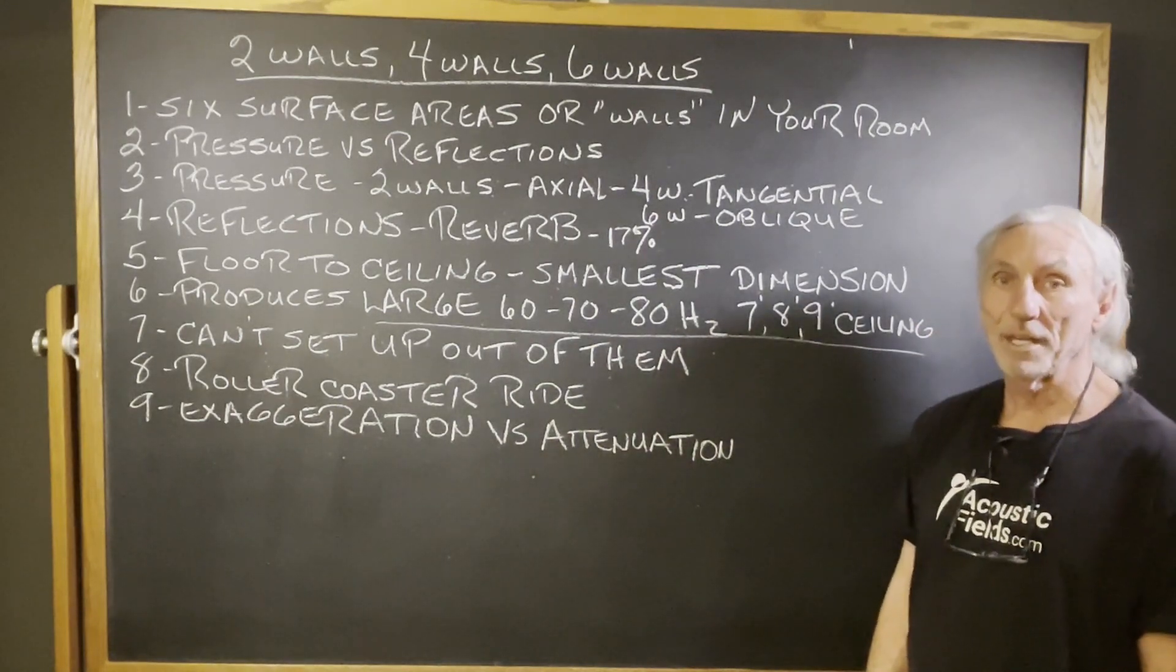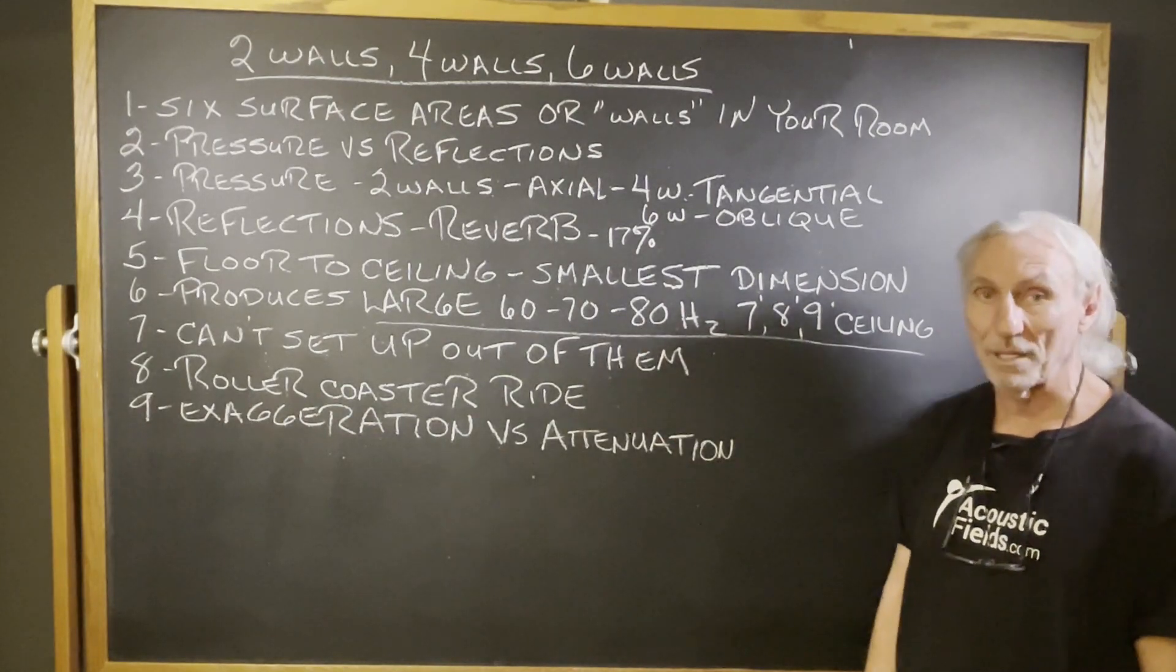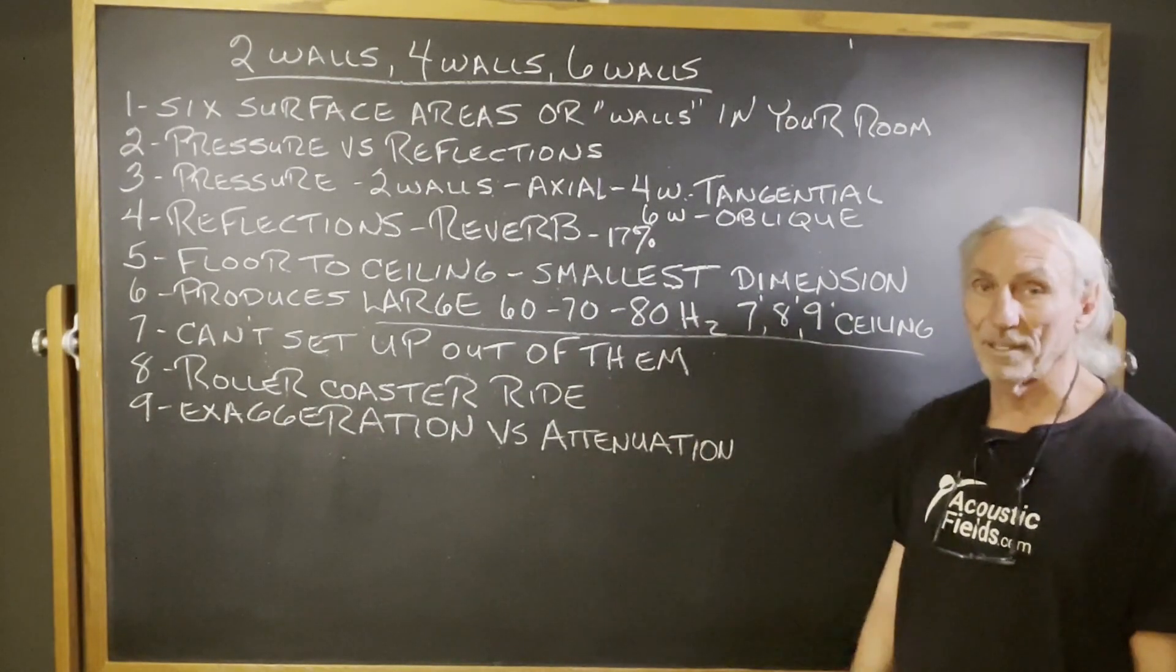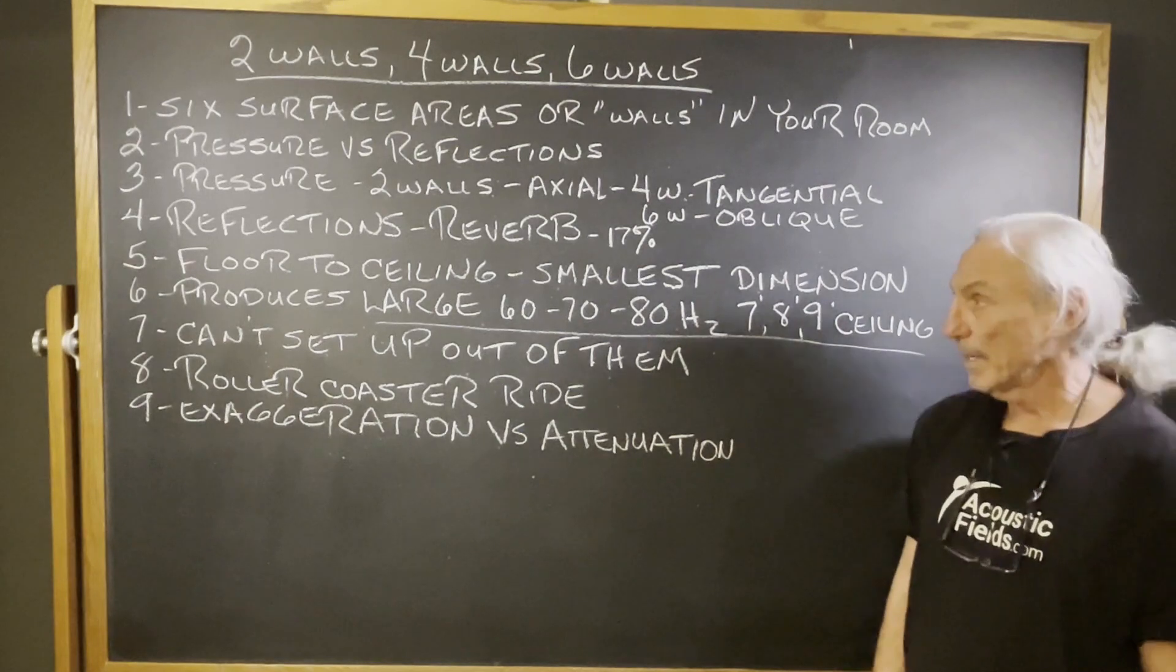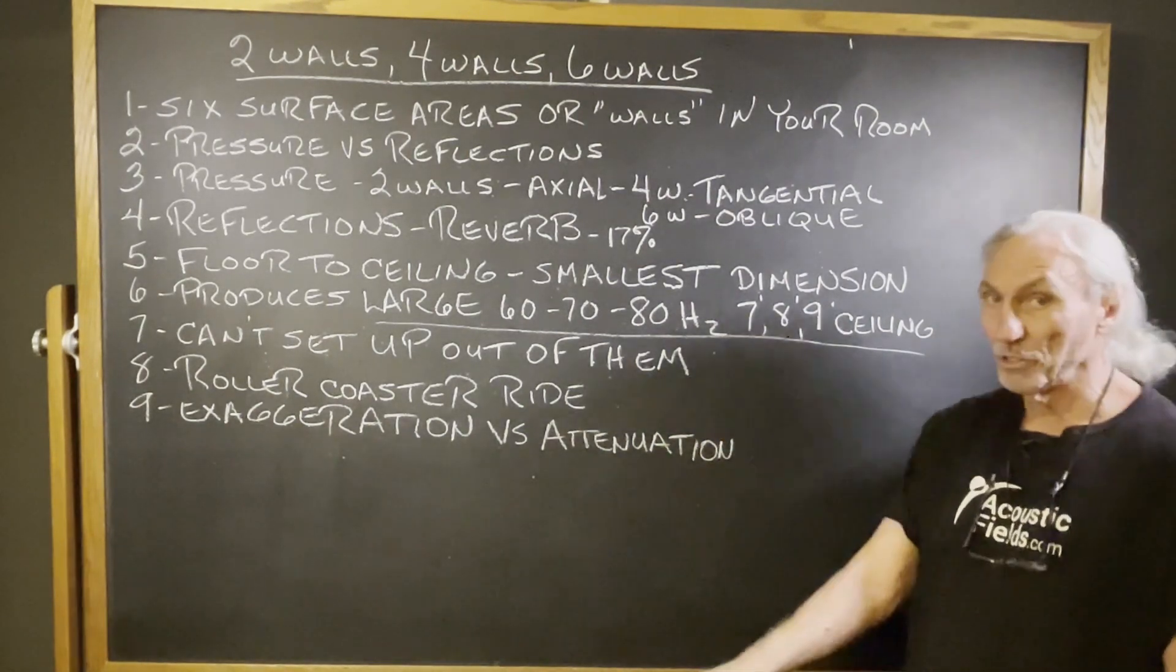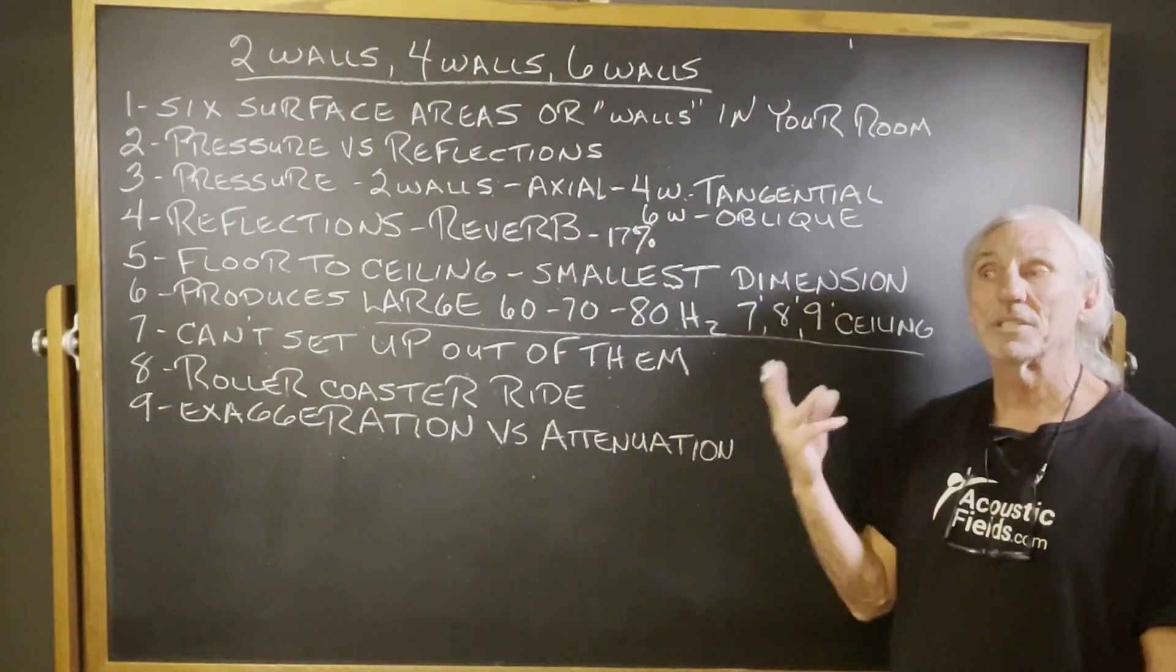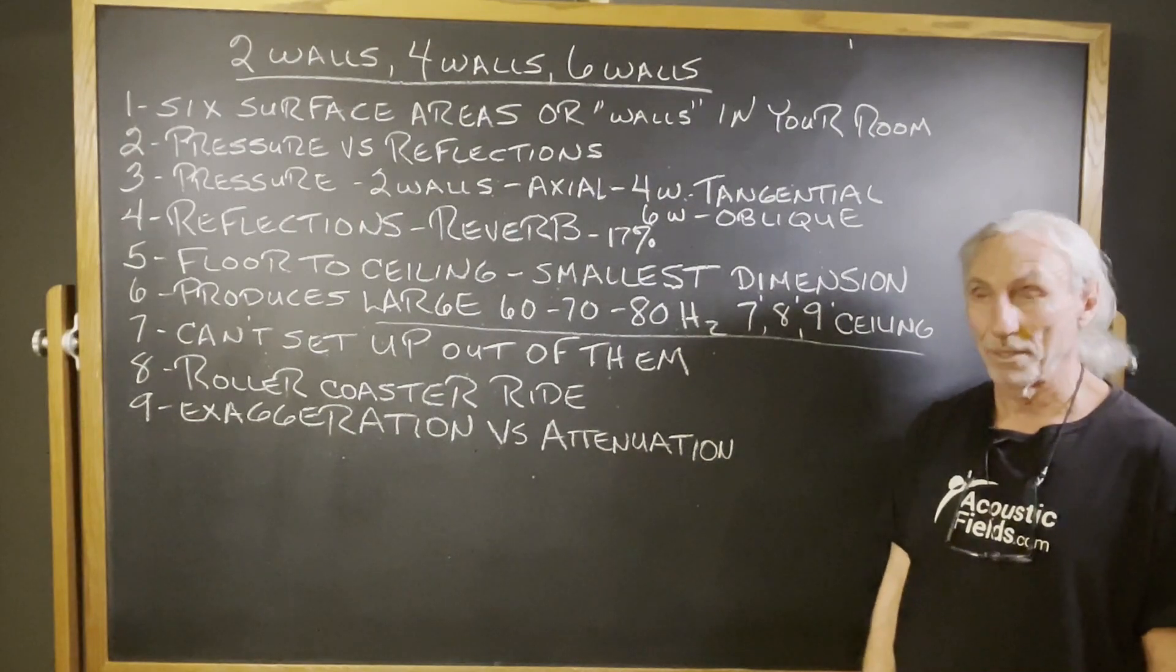60, 70, 80 cycles is the issue. Not good. These are everywhere, in all music. Can't cross over out of this. Can't set up out of them either. Can't position your speakers or your listening position to get out of those because they're everywhere in the room because the ceiling is everywhere in the room.